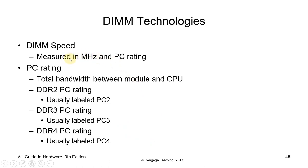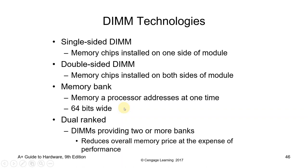DIMM speed is measured in MHz and PC rating. The PC rating is the total bandwidth between the module and the CPU. DDR2 PC rating is labeled PC2, DDR3 is labeled PC3, and so on. Single-sided DIMMs have memory chips installed on one side of the module only, while double-sided DIMMs have chips on both sides.